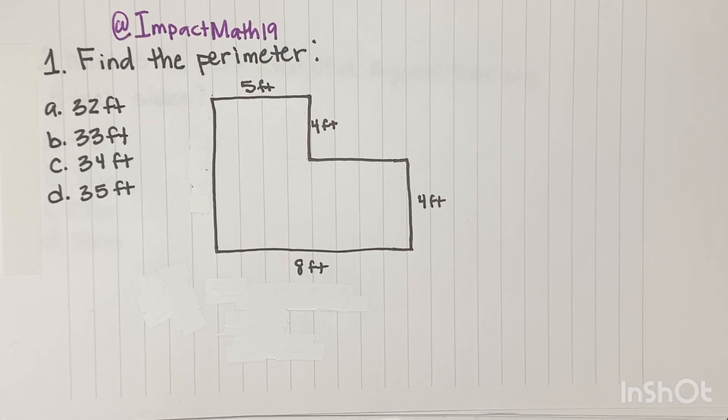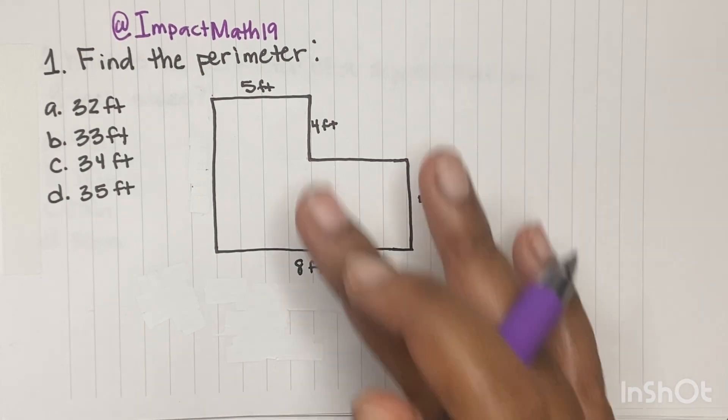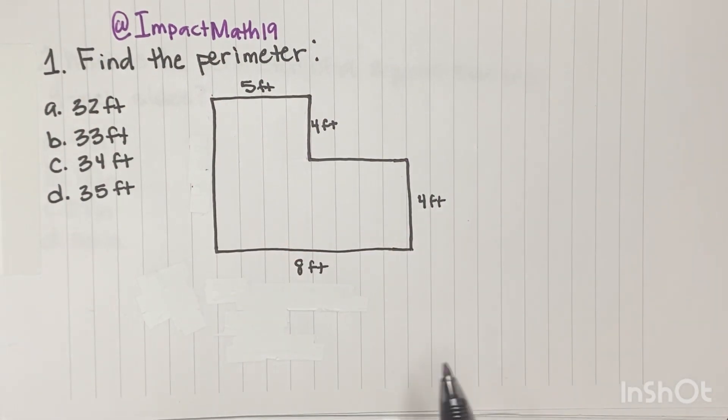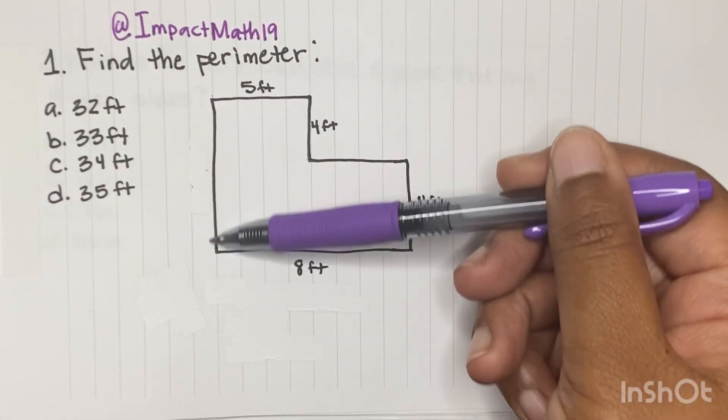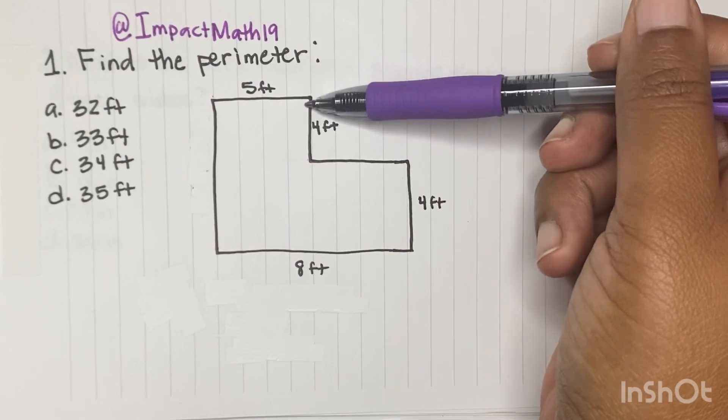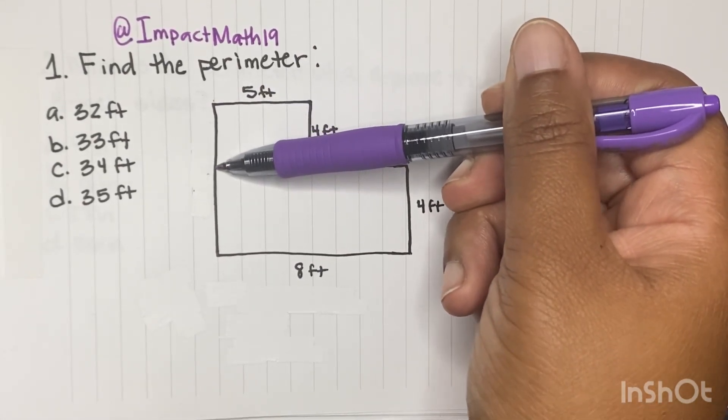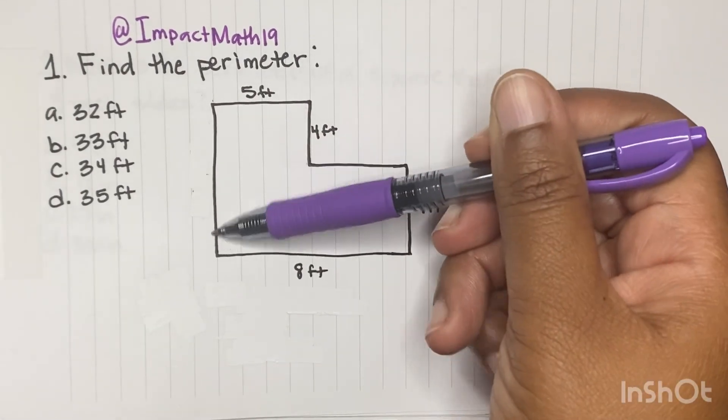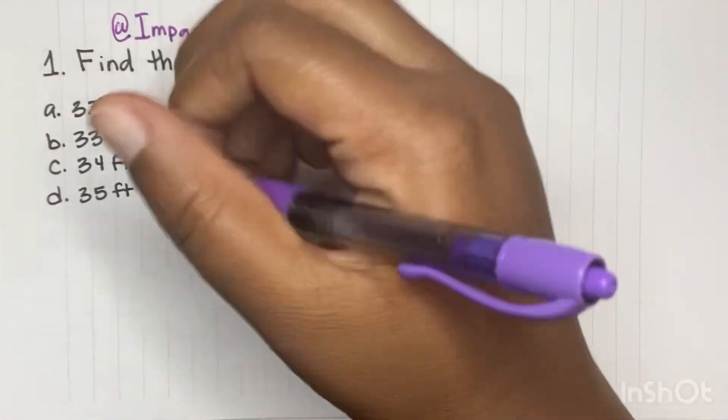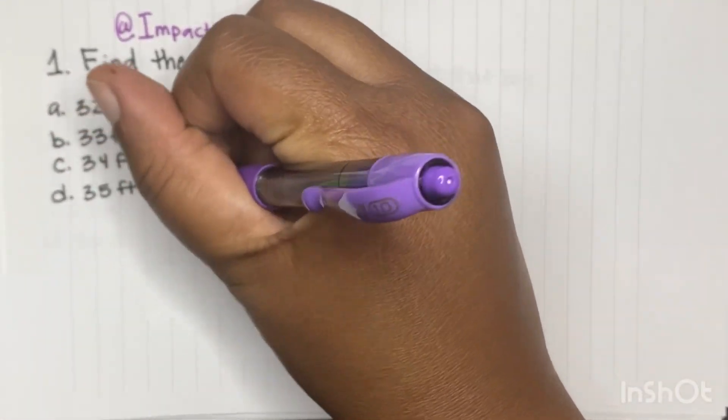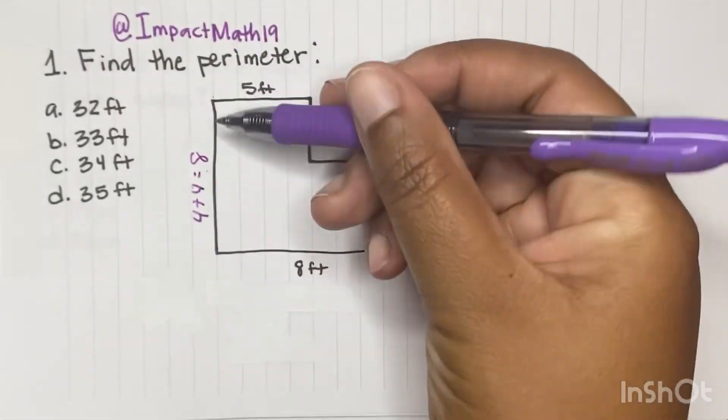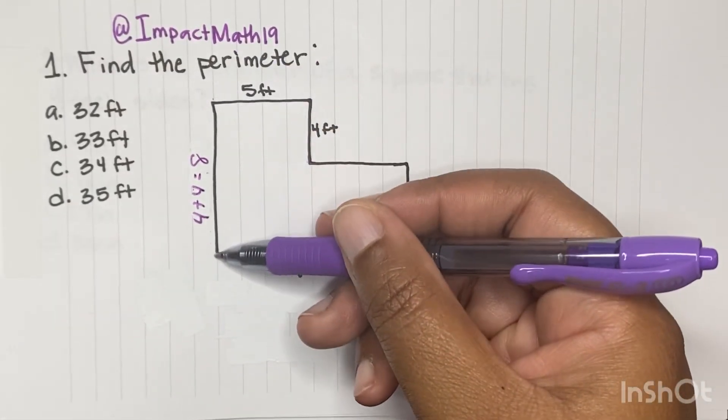We have ASVAB perimeter. Find the perimeter of this figure here. How we're going to get this length is by understanding that this right here is 4, so this up to here has to be 4. And since this is 4, this is 4. So this total length here, we would do 4 plus 4, and that would give us the total length. So this whole length would be 8.